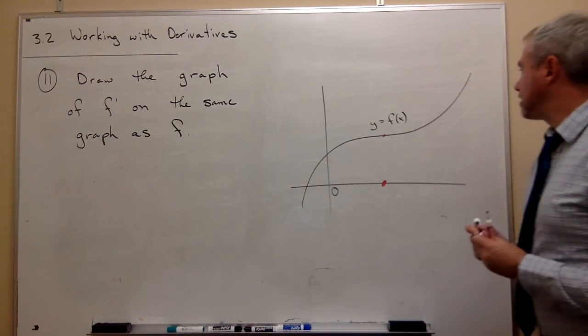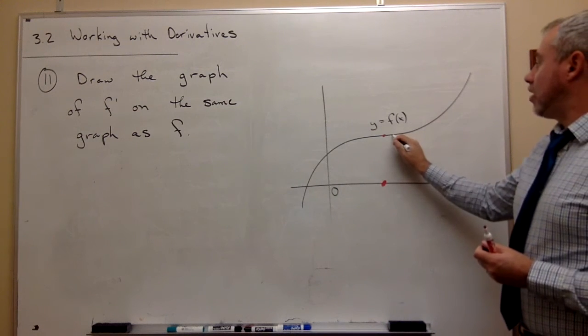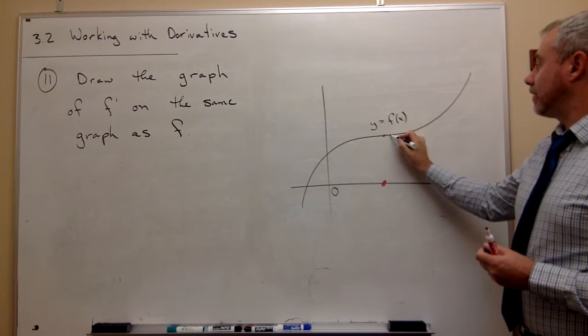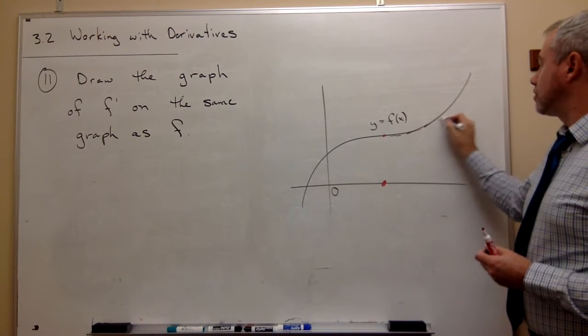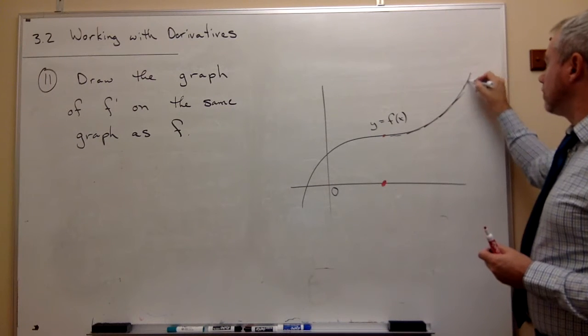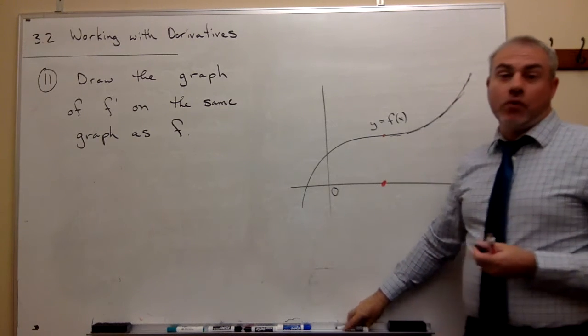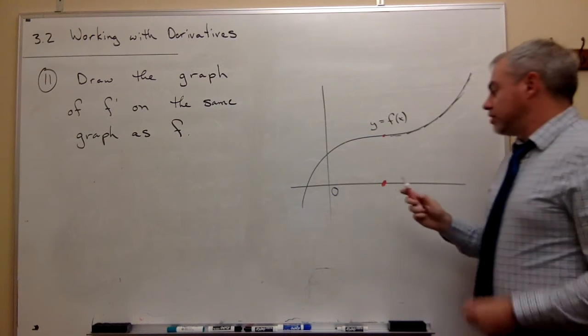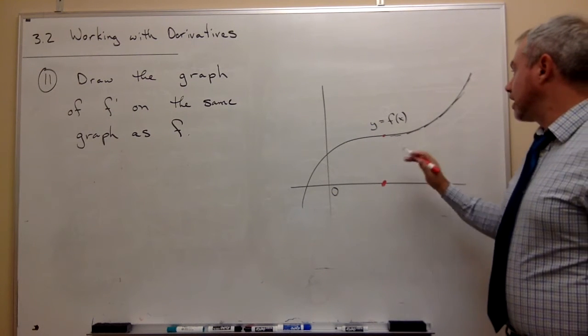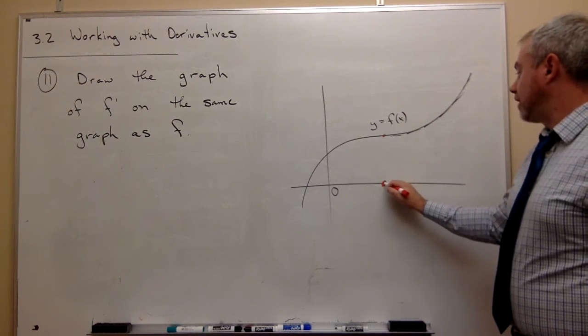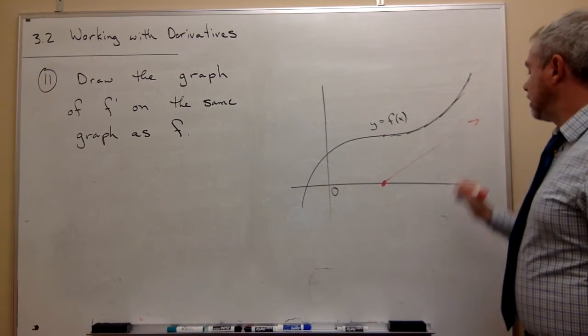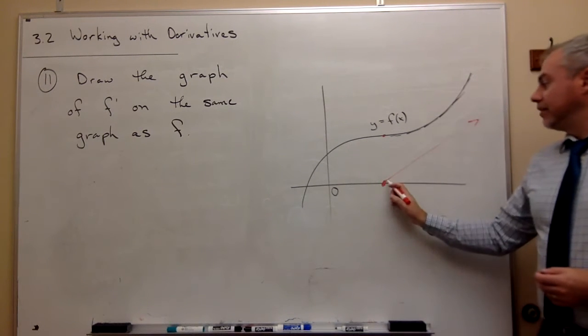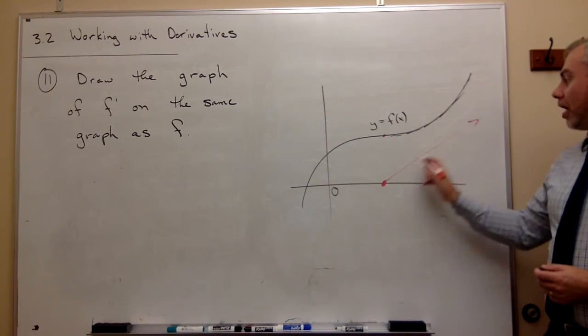Then what happens to my slopes? They are positive or negative from there. These slopes are all positive slopes and they're getting more and more positive as I move to the right. So they're positive and they're getting more and more positive as I move to the right.